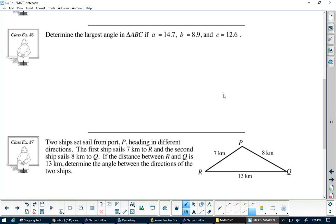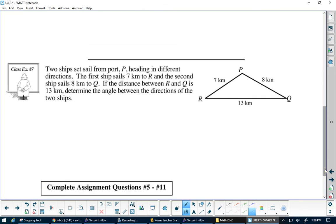This one wants angle P, so you see this is a perfect one for the cosine law. Cos P would equal—we have p, r, and q here—so it's p, so it's going to be the two on the side of it. We're going to put 7 squared plus 8 squared minus 13 squared all over 2 times 7 times 8.